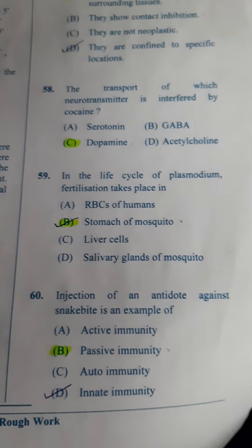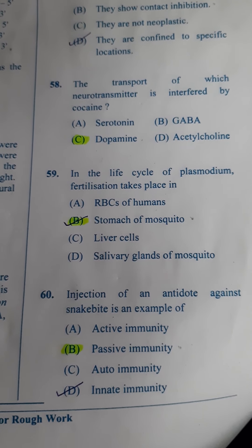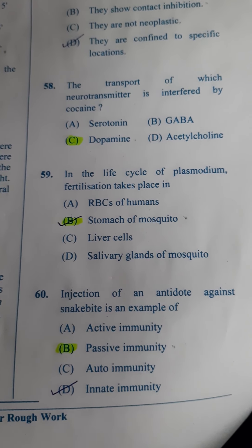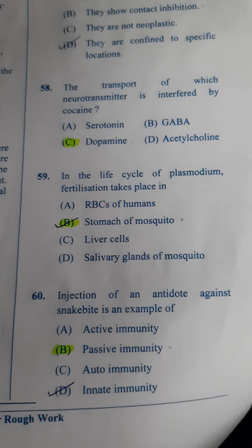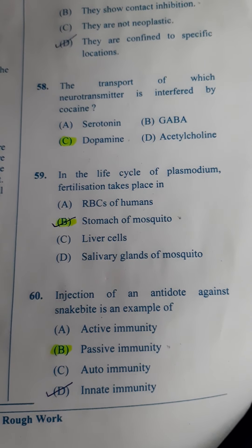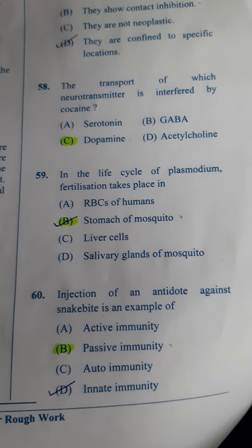Next one: The transport of which neurotransmitter is interfered by cocaine? The answer is dopamine. C is the answer.